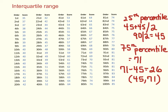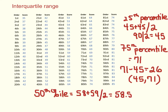Let's also calculate the 50th percentile, because those numbers are actually different. Remember that the 50th percentile is also the median. To calculate it, we get the number between the 50th and 51st observation: 58 plus 59 divided by 2 equals 58.5. So the 50th percentile, or the median, is 58.5.